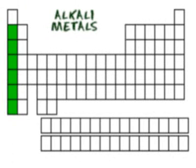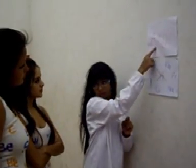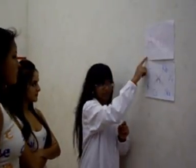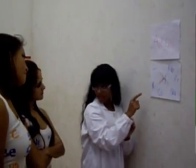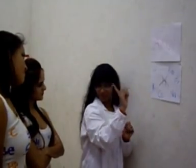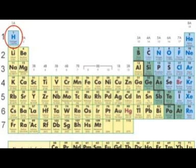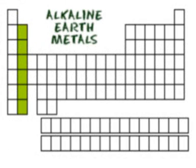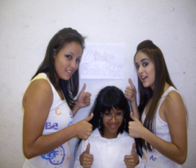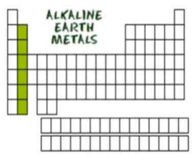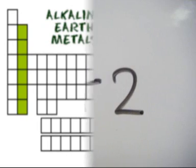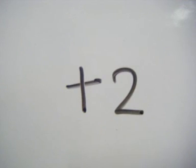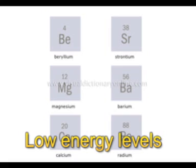If I were in group one, I would be called an alkali metal. All the elements in this group are metal, everyone except hydrogen. If I was group 2, you'd know me as an alkaline earth metal. My charge is 2 plus and my energy level would be very low.